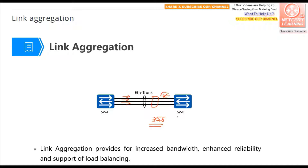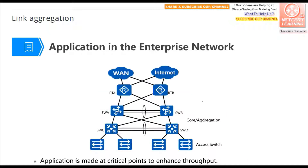Link aggregation also enhances reliability. That means when any link in this bundle goes down, the connection between these two switches will not be lost. Frames can still be forwarded between these two switches. This is the advantage of link aggregation.